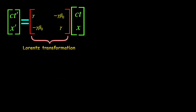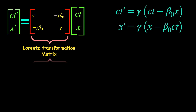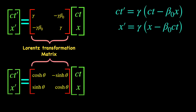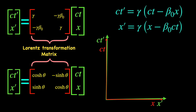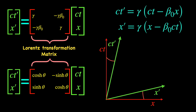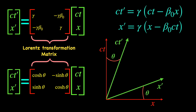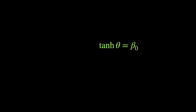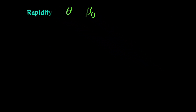Thus, the Lorentz transformation matrix transforming the standard Cartesian coordinates of space-time is made of hyperbolic functions, and the Lorentz transformation itself can be visualized as rotation of the Ct and x-axis by a constant hyperbolic angle theta determined by the relative speed β₀ between the two Lorentz frames. It goes by the name rapidity and serves as the parameter of this hyperbolic rotation.